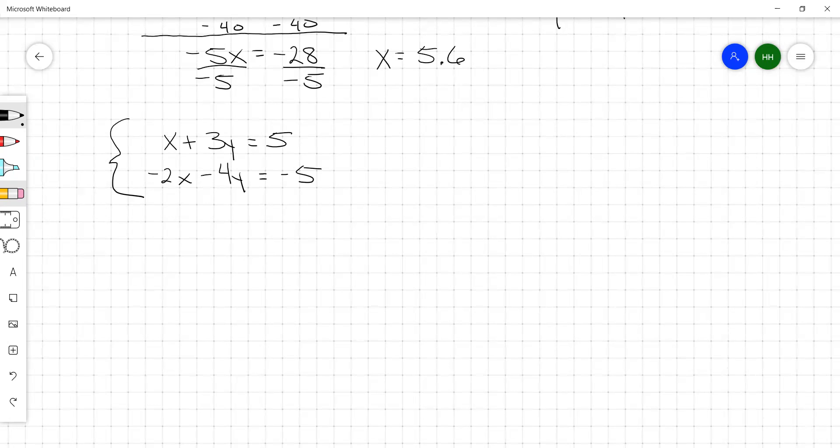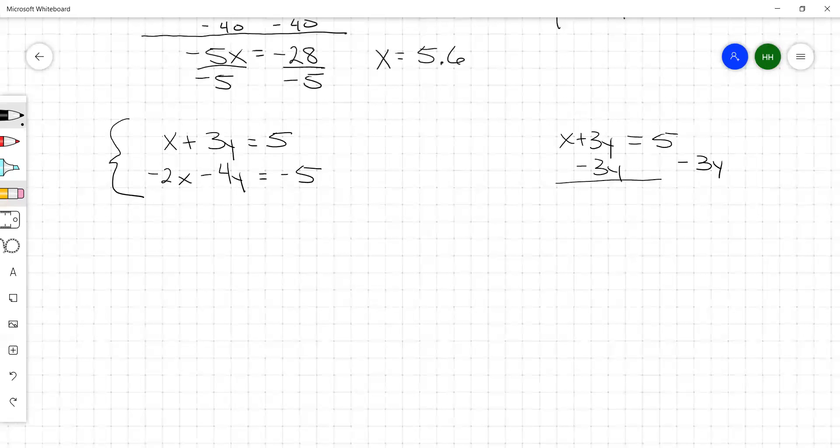I'm seeing this x sitting here by itself. So I'm going to take this x plus 3y equals 5 and subtract 3y from each side. And I'm going to get an x that's equal to 5 minus 3y.